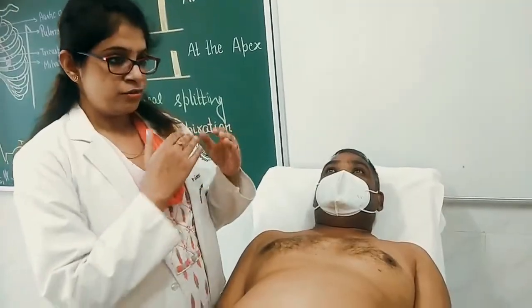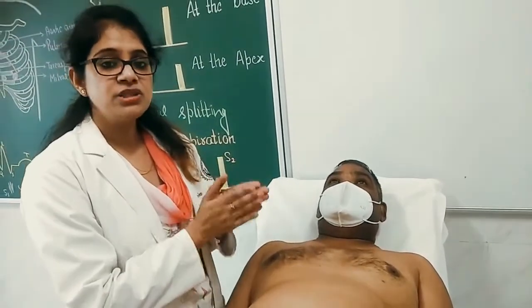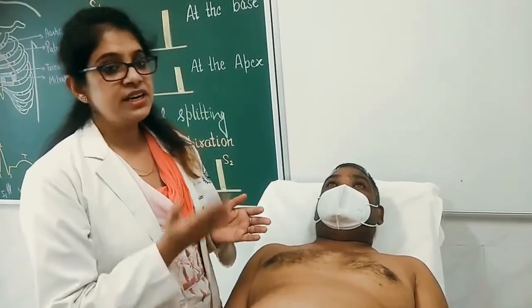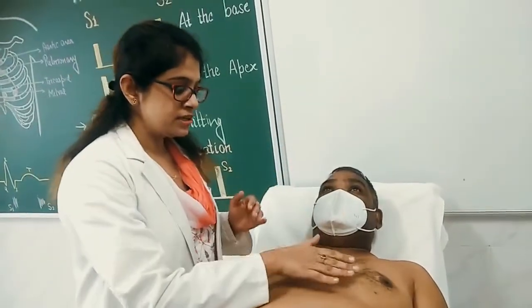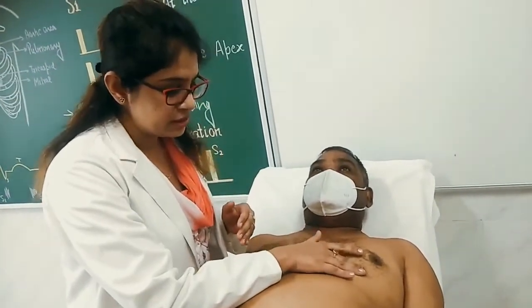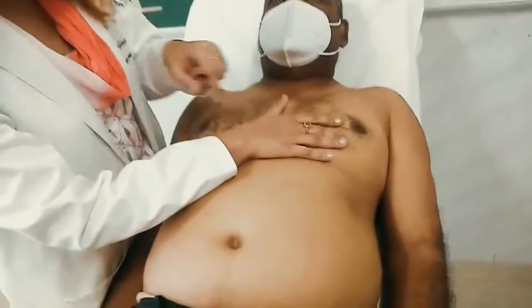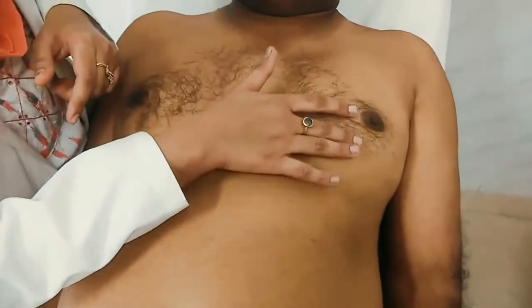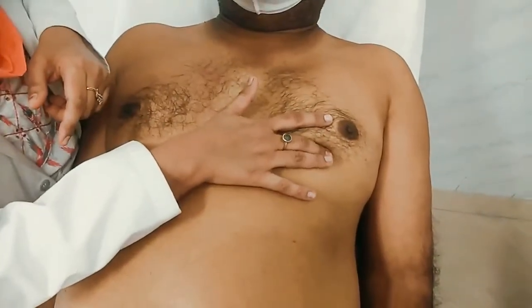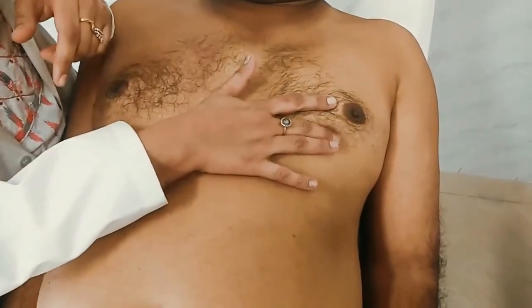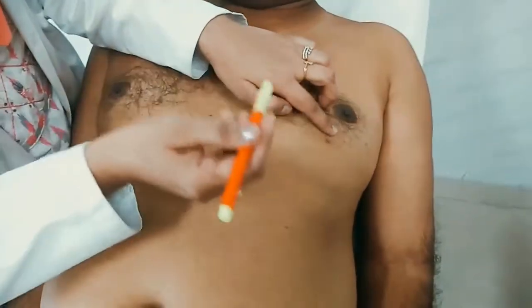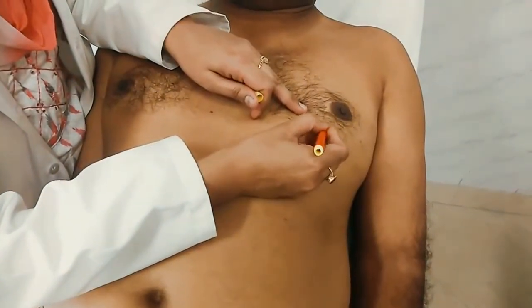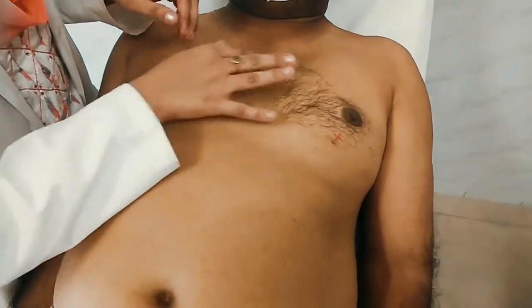For tracing the left border of the heart, first you need to locate the apex beat. I have already explained in my previous video how to locate the apex beat. Suppose the apex beat has been located in the fifth intercostal space. You will first mark the apex beat and then count the intercostal spaces.